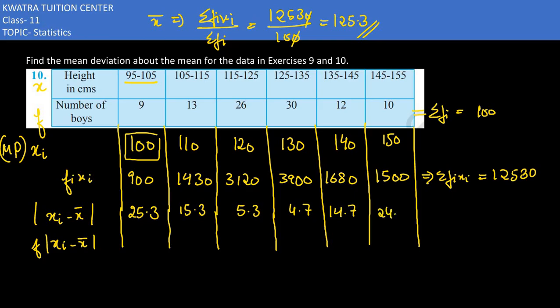Now multiply this table with the frequency. 9 times 25.3 gives you 227.7. 13 times 15.3 gives 198.9. Then 26 times 5.3 is 137.8. 30 times 4.7 is 141. 12 times 14.7 is 176.4. 10 times 24.7 is 247.